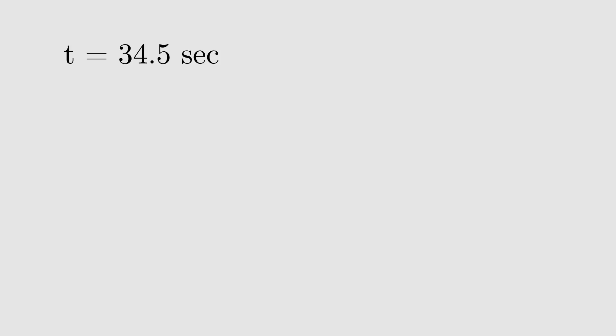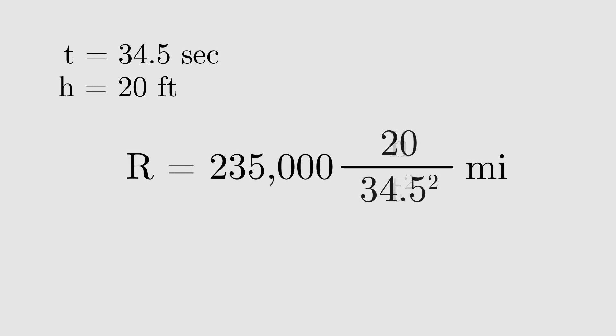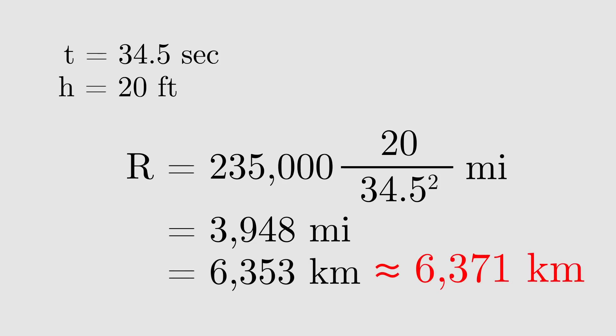With an elapsed time of 34.5 seconds and a height difference of 20 feet, the formula says that the Earth's radius is about 3,948 miles or 6,353 kilometers, very close to the accepted value.